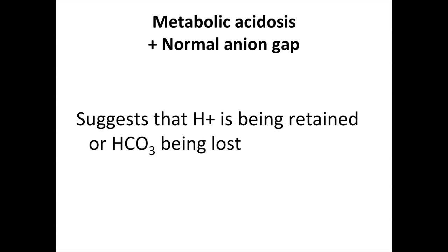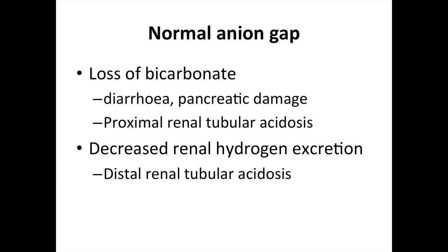Metabolic acidosis with a normal anion gap suggests that hydrogen ions are being retained or bicarbonate is being lost. Causes include loss of bicarbonate from diarrhoea, pancreatic damage, proximal renal tubular acidosis, or decreased renal hydrogen excretion in distal renal tubular acidosis.